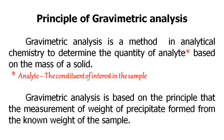Gravimetric analysis is a method in analytical chemistry to determine the quantity of an analyte based on mass of a solid. The analyte is the constituent of interest in the sample. It is based on the principle of measuring the weight of precipitate formed from a known weight of the sample.